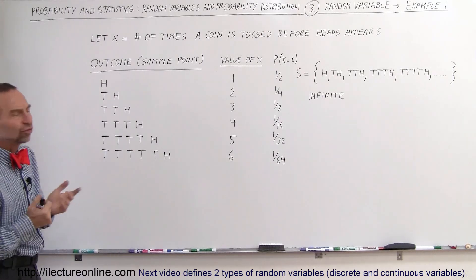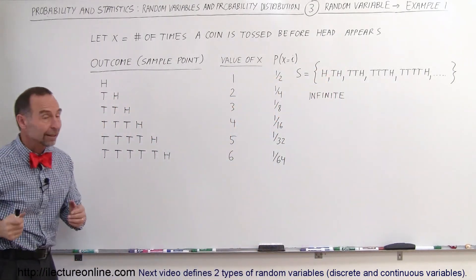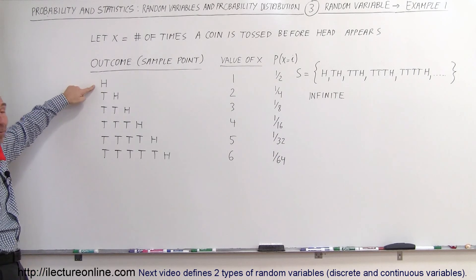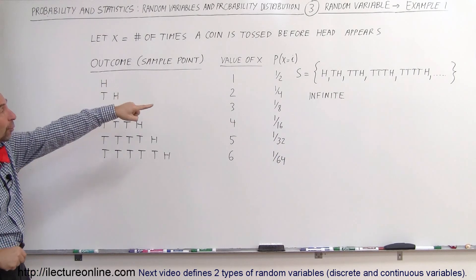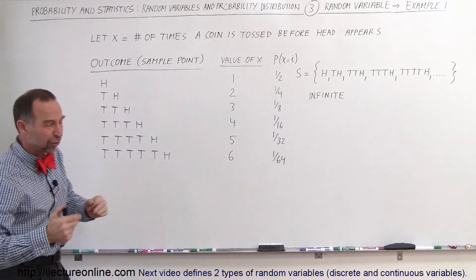We're looking for one head, so before head appears. We could toss it one time, and the first time we get a head, the value will be one, and the probability of that happening is one out of two, because it could be heads or tails.